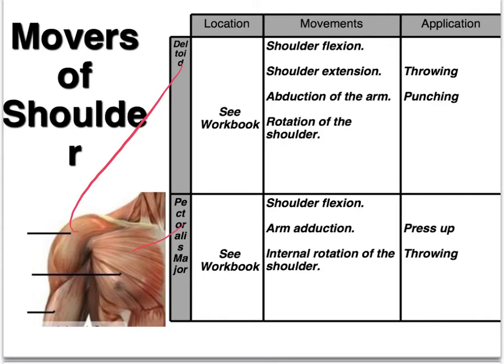Pectoralis major: shoulder flexion and arm adduction, bringing the arm in towards your body.